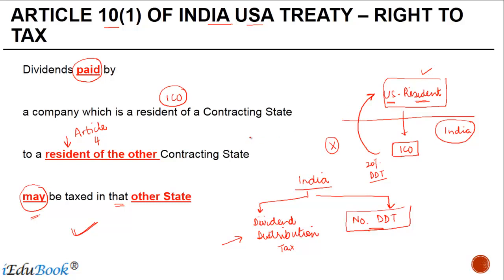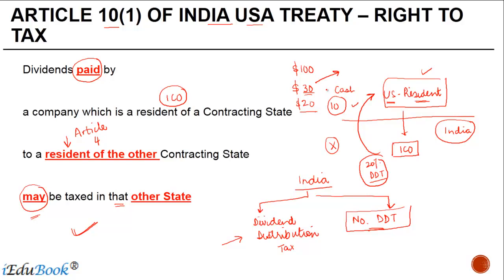Under the treaty, the right to tax dividend is also with the US. When the US shareholder prepares his US tax return, he is going to include the dividend paid by the Indian company. Let's say it is $100. If the United States taxes such dividend and levies a tax of $30, the issue which comes up is: will the dividend distribution tax paid in India be deductible from this $30 — meaning will he get a credit of $20 — so that he only pays $10 to the US government?